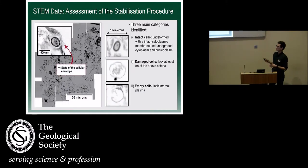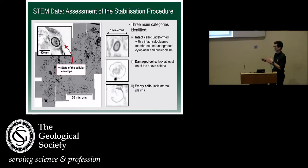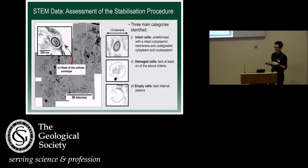You would expect to see living, dead, and moribund bacteria within a natural population, and we found that the proportion of living, dead, and moribund were very similar to what you would expect. So we didn't see a large number of empty cells or damaged cells, which would indicate that we had basically obliterated our sample.